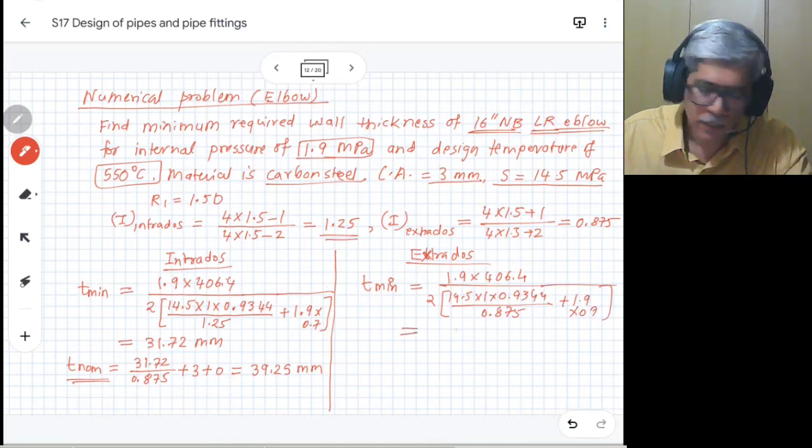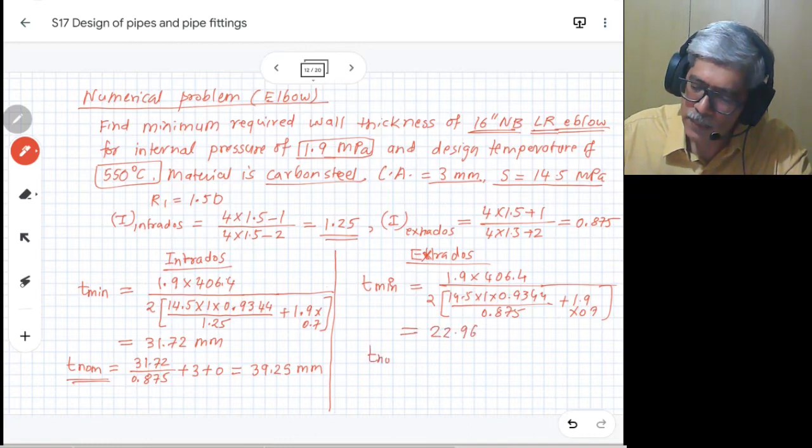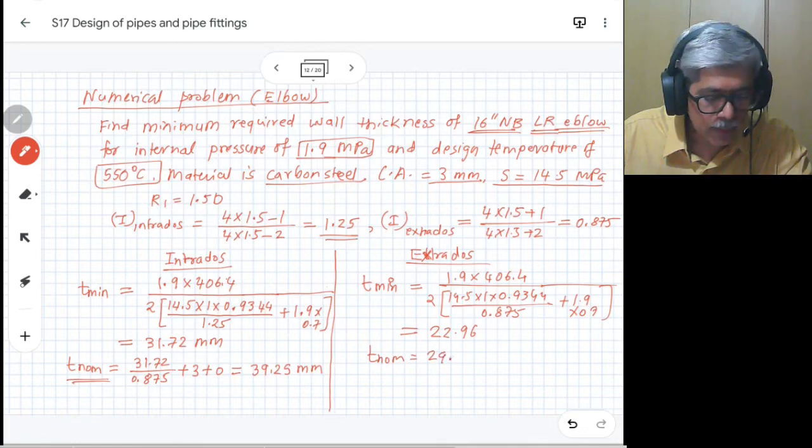We'll get the required thickness as 22.96, so t nominal will be equal to 29.24 millimeters.